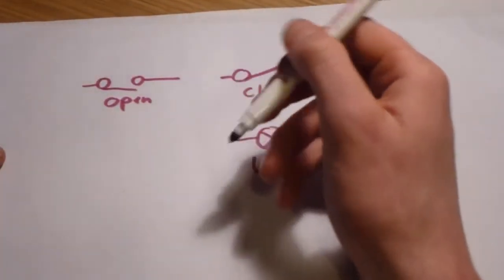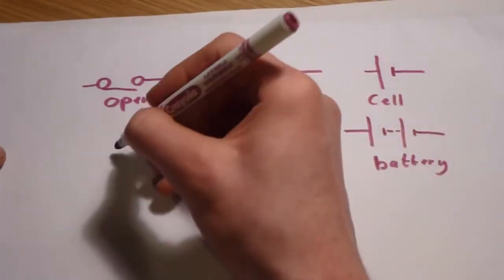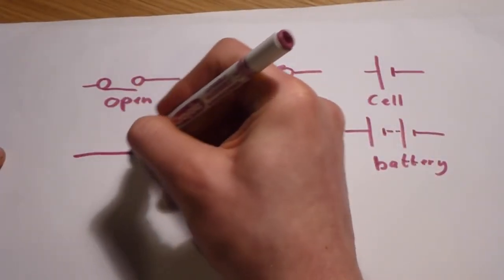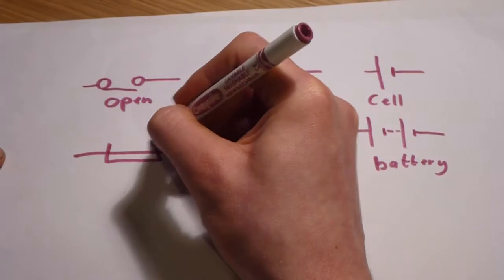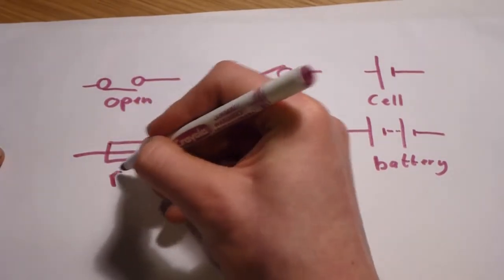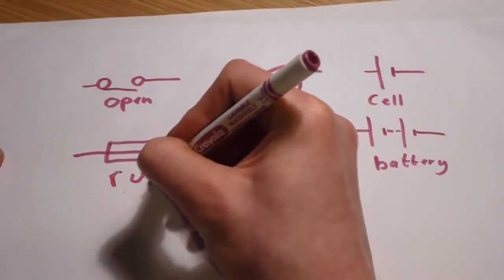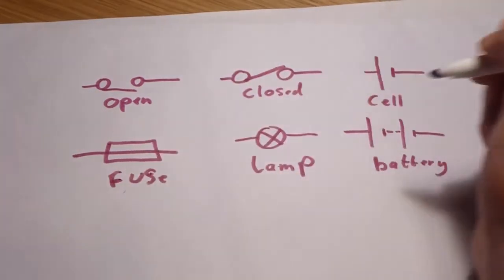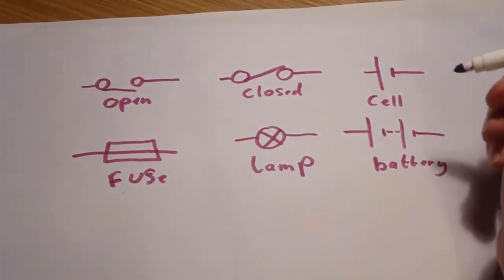After we have the lamp, we have a fuse, which is simply a wire with a box drawn around it, because that is all that a fuse is, which is designed to break if the current gets too high.